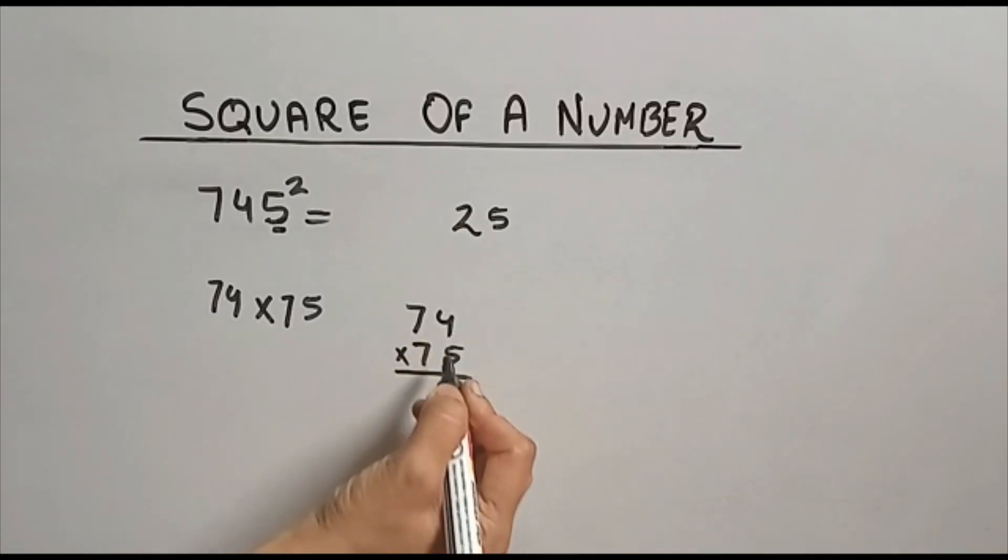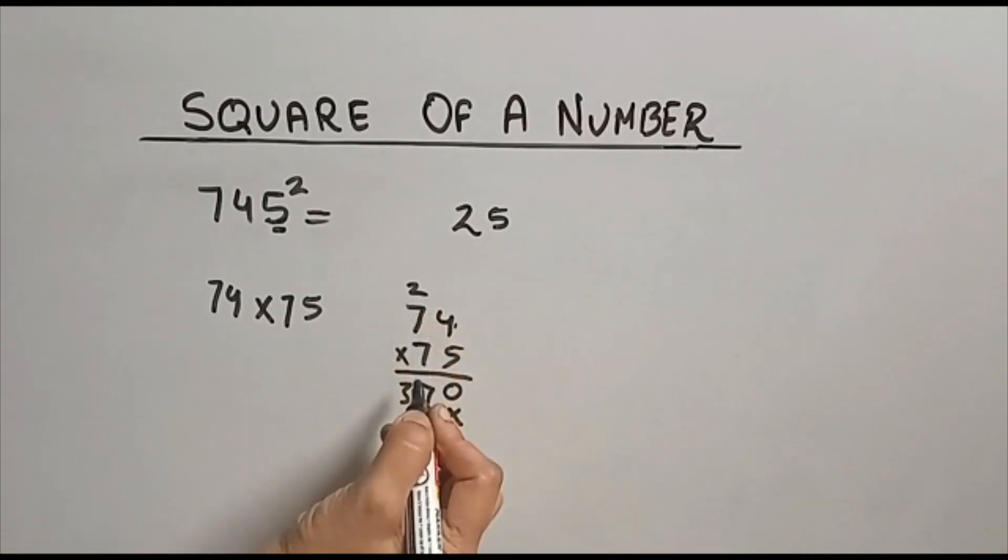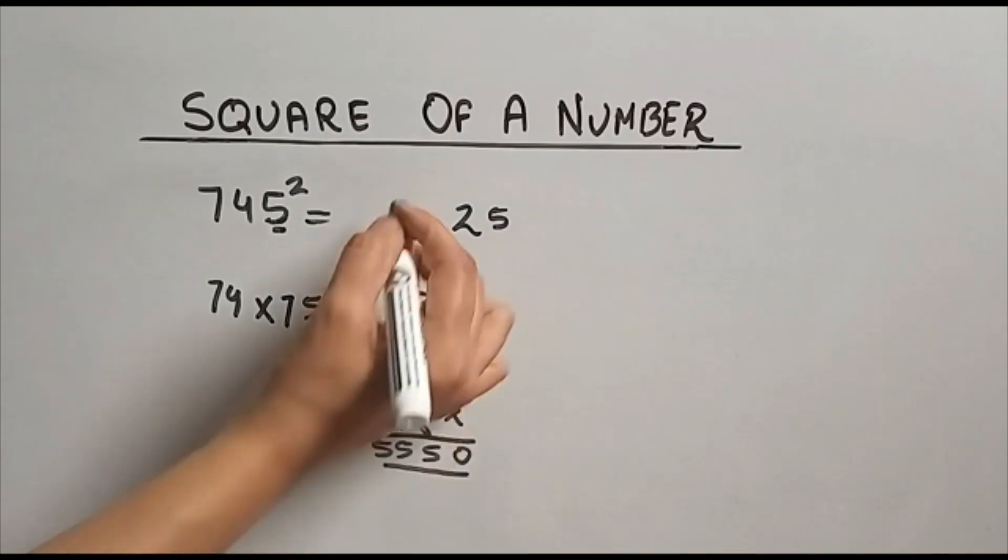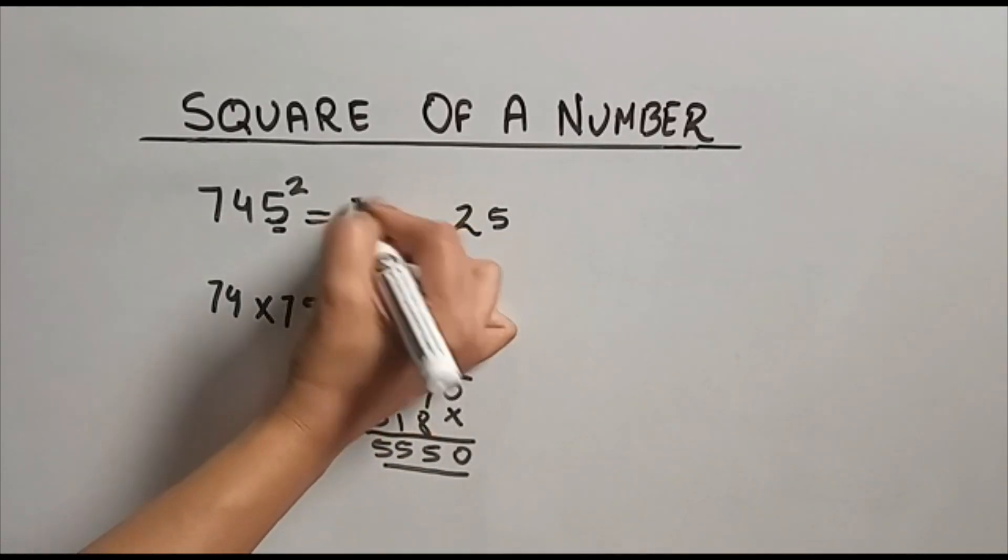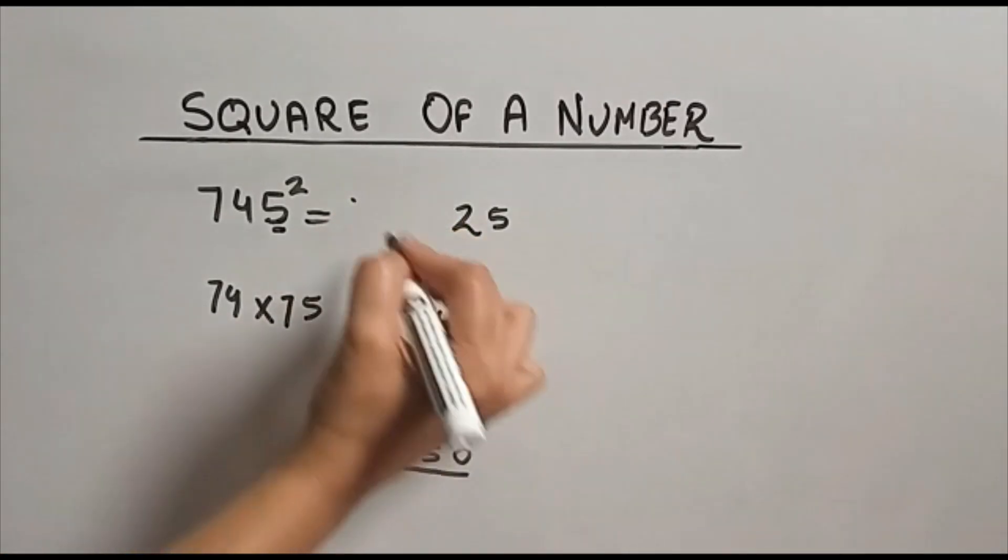5×4 is 20, 2 here. 5×7 is 35 plus 2 is 37. 7×4 is 28. Again 2 here. 7×7 is 49 plus 2 is 51. 0, 5, 5, 5. Now this number we are going to write here at the left hand side of this 25.